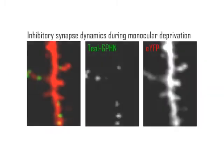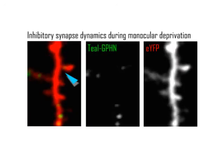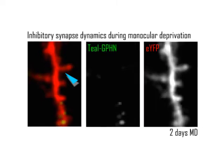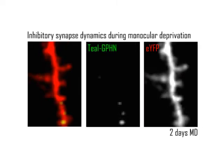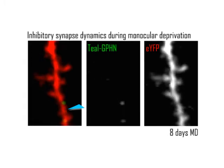An eight-day period of monocular deprivation, known to induce ocular dominance plasticity, produced a rapid and specific loss of inhibitory spine synapses during the first two days of deprivation. We observed a loss in inhibitory shaft synapses that was more modest and persisted throughout the deprivation period. We speculate that changes in inhibitory spine synapses serve to modulate individual excitatory inputs contacting the same spines, while changes in shaft synapses may regulate the levels of dendritic excitability of individual branches.